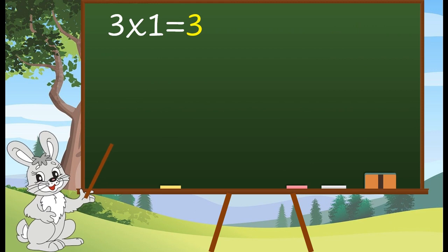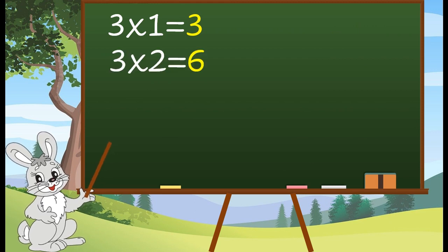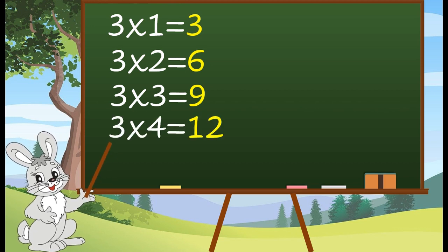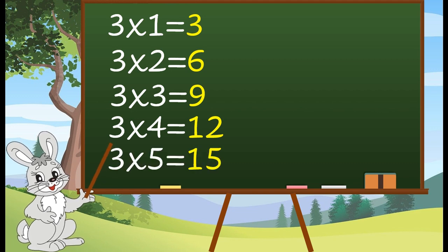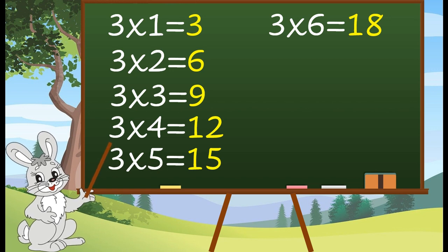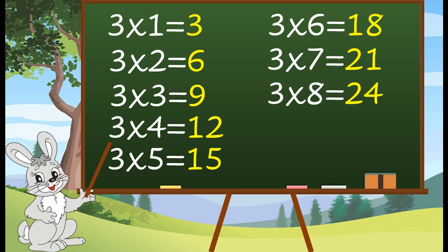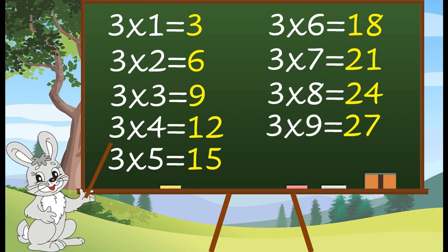3 1's are 3. 3 2's are 6. 3 3's are 9. 3 4's are 12. 3 5's are 15. 3 6's are 18. 3 7's are 21. 3 8's are 24. 3 9's are 27.